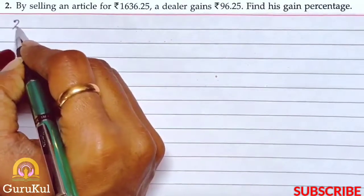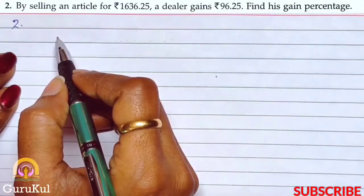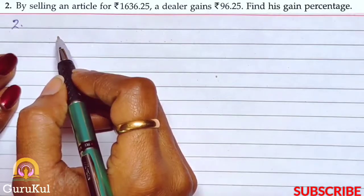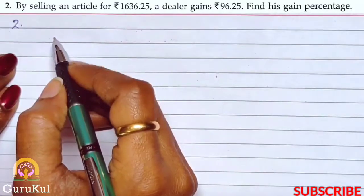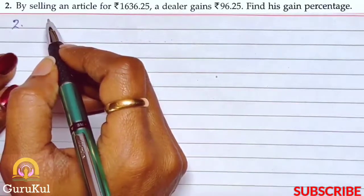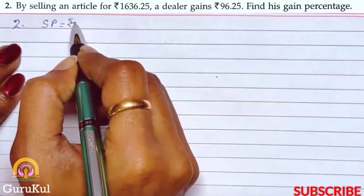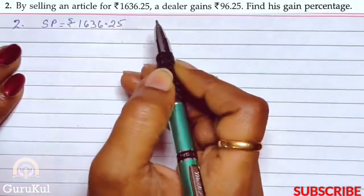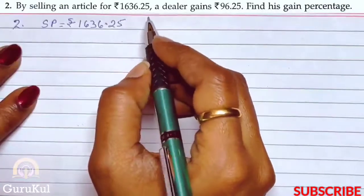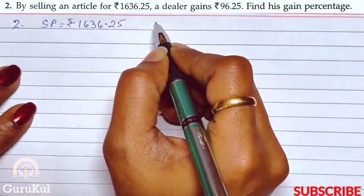Now question number 2. It says: by selling an article for Rs. 1,636.25, a dealer gains Rs. 96.25. Find his gain percentage. Here, the selling price is Rs. 1,636.25, and the dealer makes a profit, so profit or gain is Rs. 96.25.